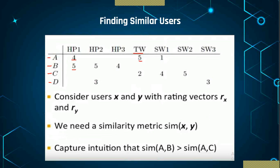User B has given rating 5 to Harry Potter 1, rating 5 to Harry Potter 2, and rating 4 to Harry Potter 3. So we have 4 users A, B, C, D and there are 7 movies in our dataset. Each user — X and Y — gives some rating, and that is represented by a vector. So the rating of A can be represented as a vector: 4, 5, and 1. Then the rating of B is equal to vector 5, 5, and 4, and so on. These are the values given by each respective user, and that is called the rating vector.